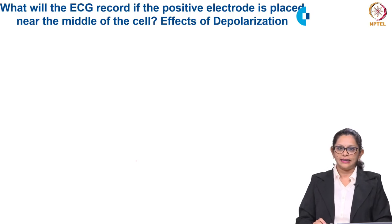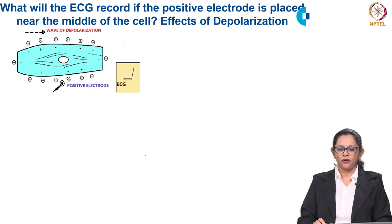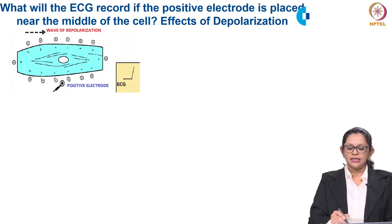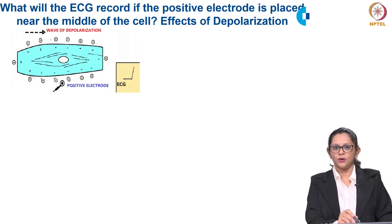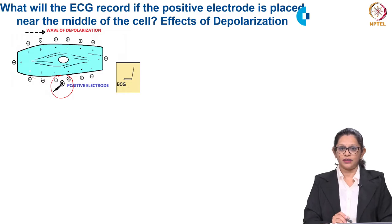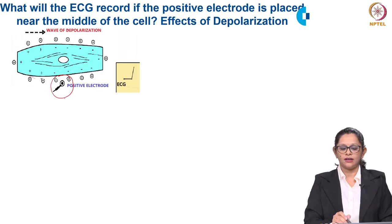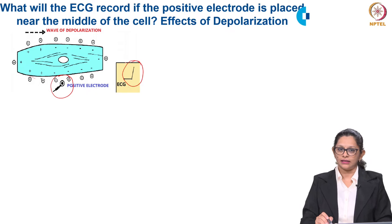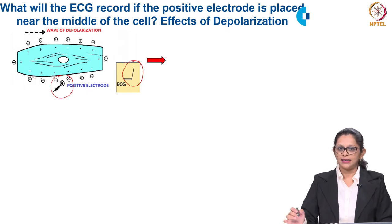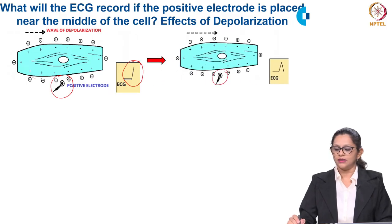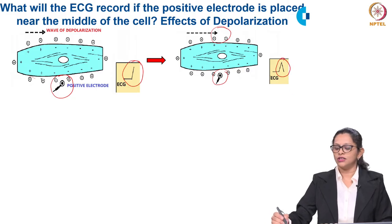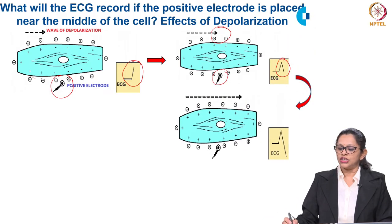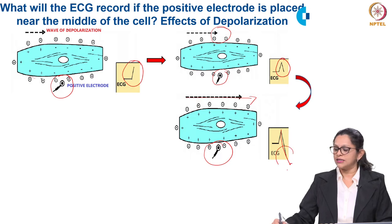The first event happening in the heart is a depolarization event. When a wave of depolarization passes through the heart muscle, and a positive electrode is placed in the center, how does it record? When the wave of depolarization passes before the positive electrode, it will be indicated as a positive deflection on the ECG. As this wave passes along and reaches the positive electrode, the deflection comes back down to the baseline. When the depolarization passes away from the positive electrode, the deflection on the ECG will move downward and form a negative wave.